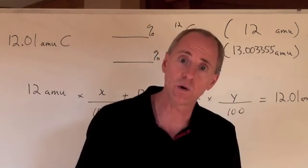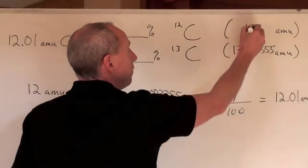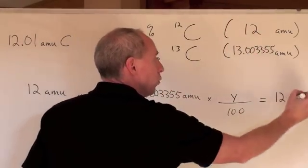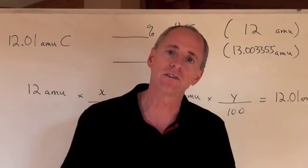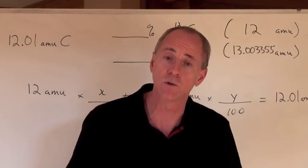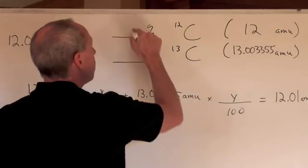But what happens if you're asked this question? You're given the masses here and you're given what the total is, which is 12.01, which is the molar mass of carbon on the periodic table, right, 12.01. What are the percentages?